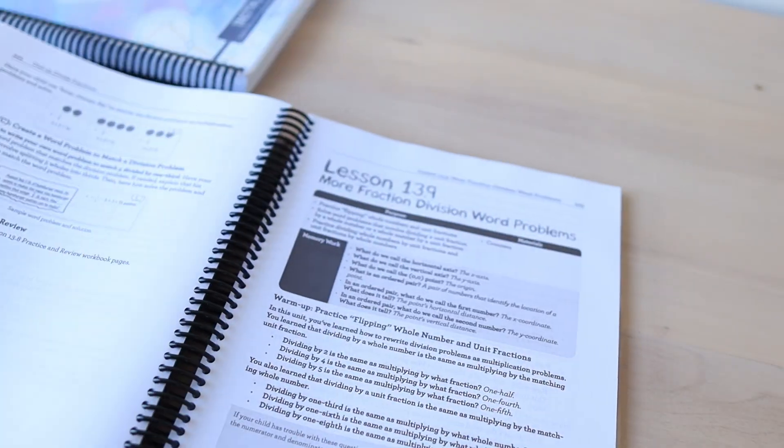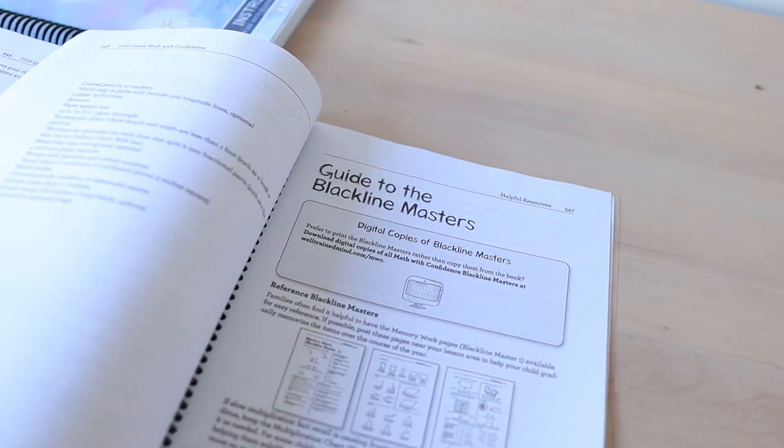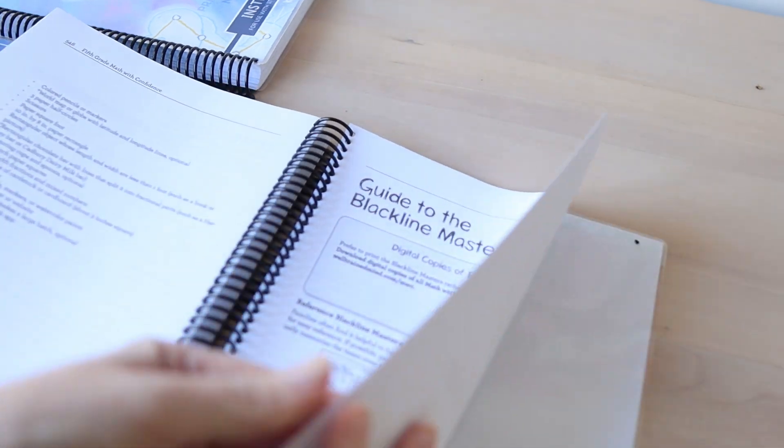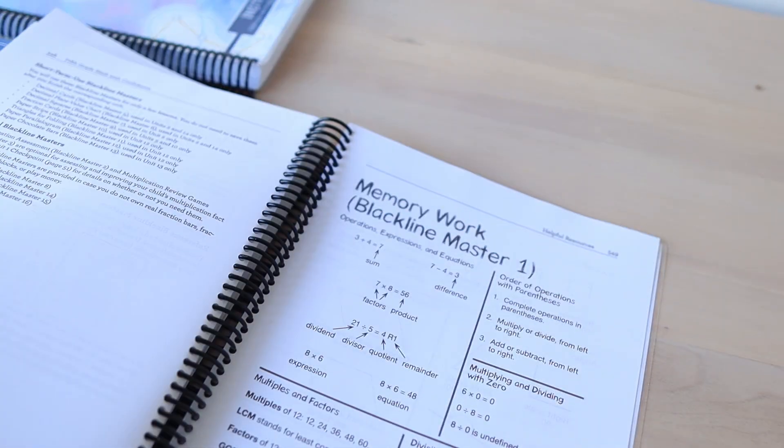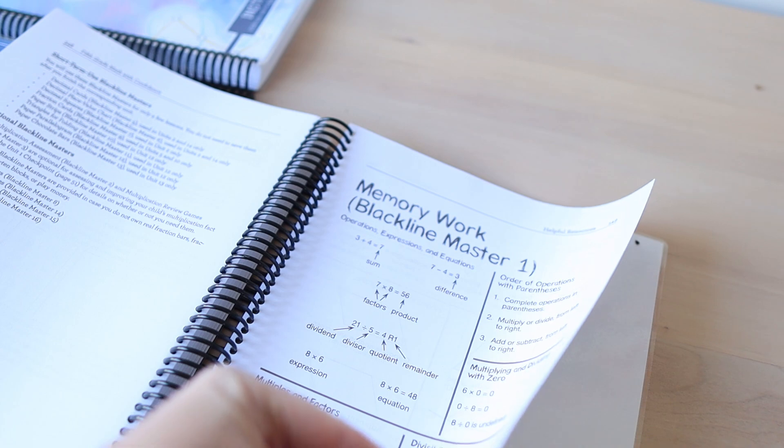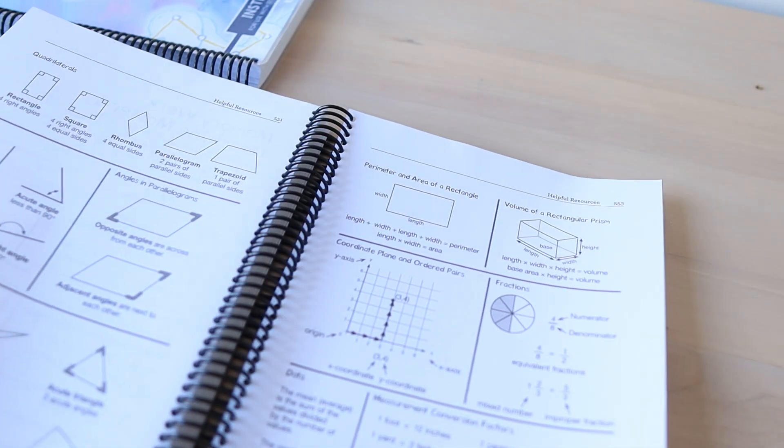Part two is the same. I just broke it down and I didn't print out all of the black line masters because I don't need them. Some of the black line masters are things we already have and if I feel like we need them I can just print them and laminate them. That's your instructor's guide.